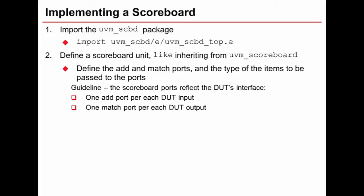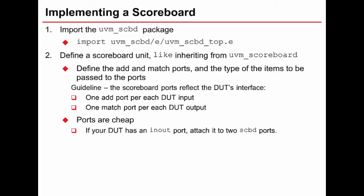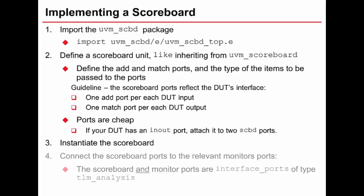Ports don't cost you anything, so if your DUT has an in-out port or bi-directional port, then we can attach it to two scoreboard ports. Once we've defined our scoreboard unit which inherits from uvm_scoreboard, we can instantiate our user-defined unit and connect the ports to the relevant interface UVC monitor ports. As a reminder, the kinds of ports we use are interface ports of type TLM analysis - transactional level modeling ports.